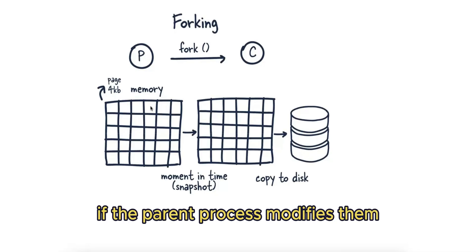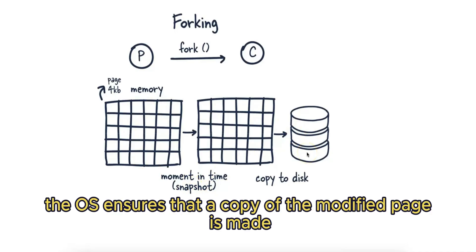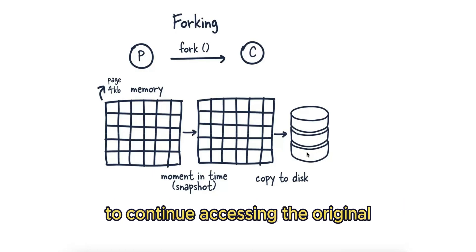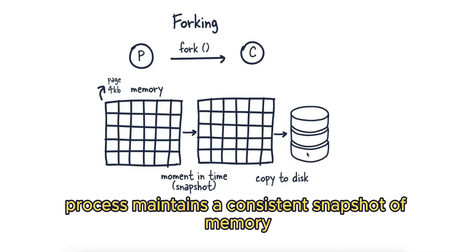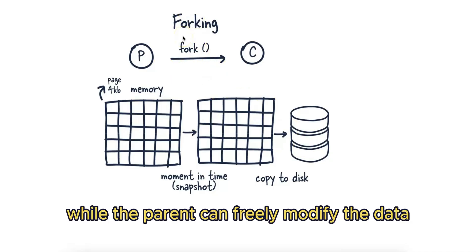If a client writes new data to Redis, the OS ensures that a copy of the modified page is made, allowing the child process to continue accessing the original unchanged pages. This way, the child process maintains a consistent snapshot of memory at the time the fork was initiated, while the parent can freely modify the data going forward.